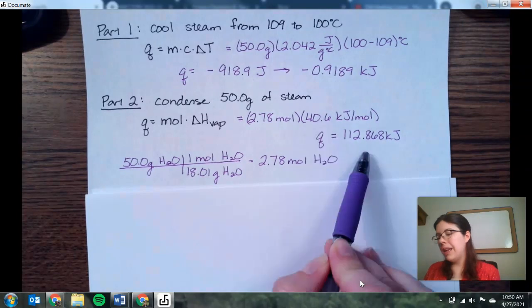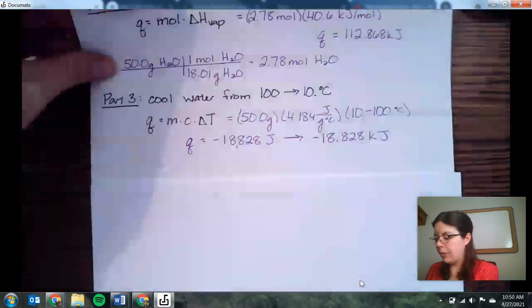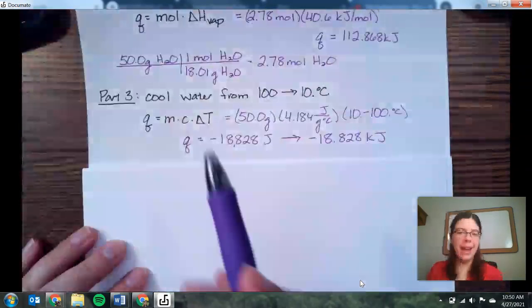Multiply those two things together, it gives us 112.868 kilojoules. And again, we're going to wait to the very end to round our answers together, or to round the sig figs when we add them all up.